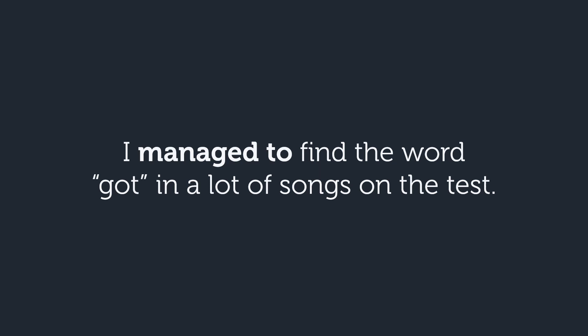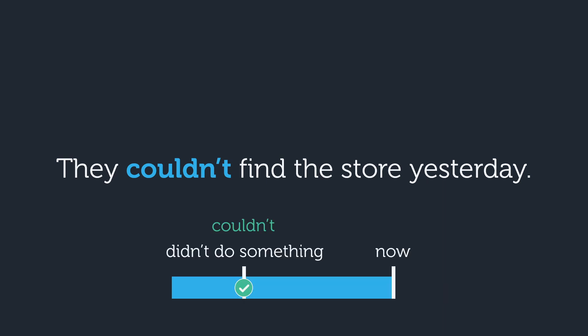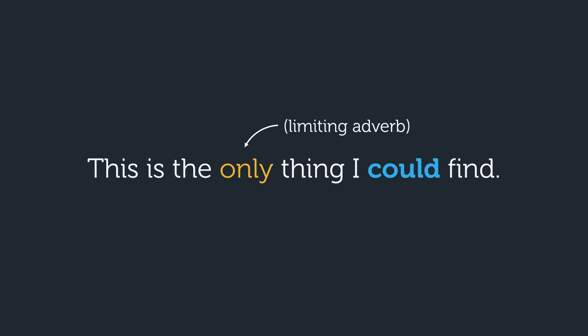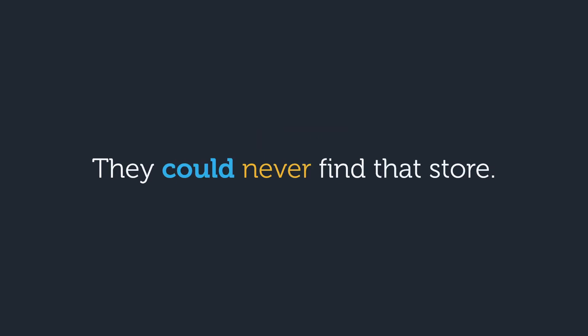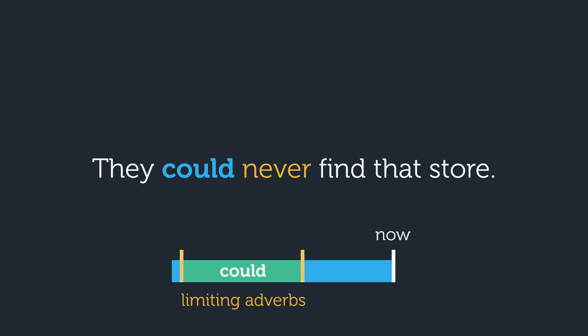Both of those make it clear that you're talking about one specific past achievement. Like anything in English, there are a few exceptions. For example: they couldn't find the story yesterday. Unlike 'could,' it's okay to use 'couldn't' to talk about a specific past achievement or action. One of the only times you might use 'could' to talk about a specific achievement is with a limiting adverb — something like 'only,' 'never,' or 'hardly.' For example: this is the only thing I could find, or they could never find that store. Thanks to that limiting adverb, we limit 'could' to a specific moment.